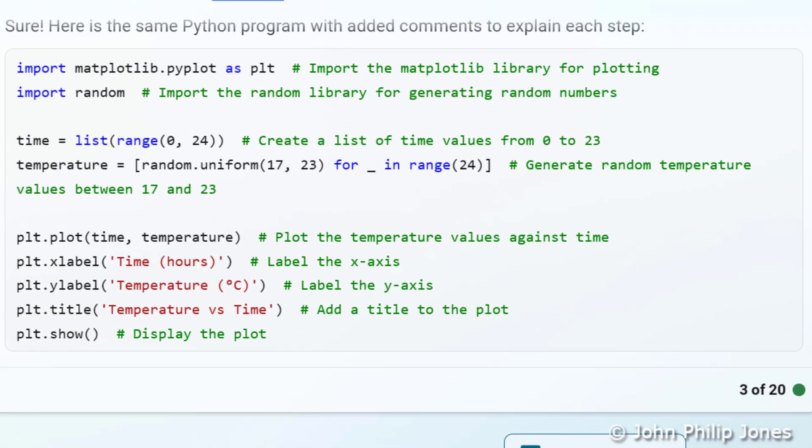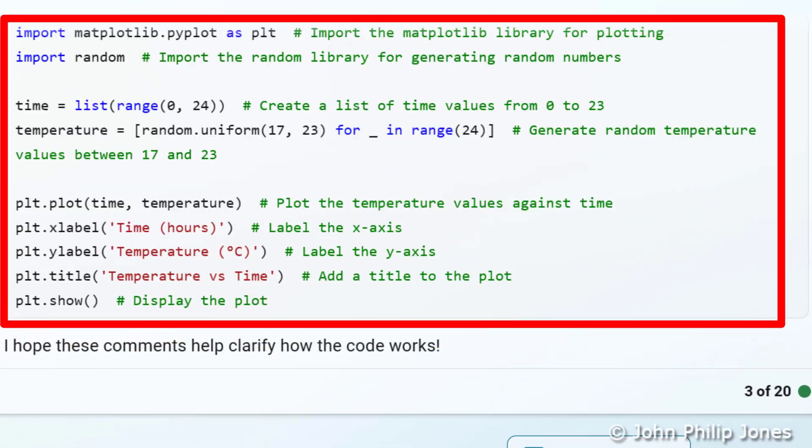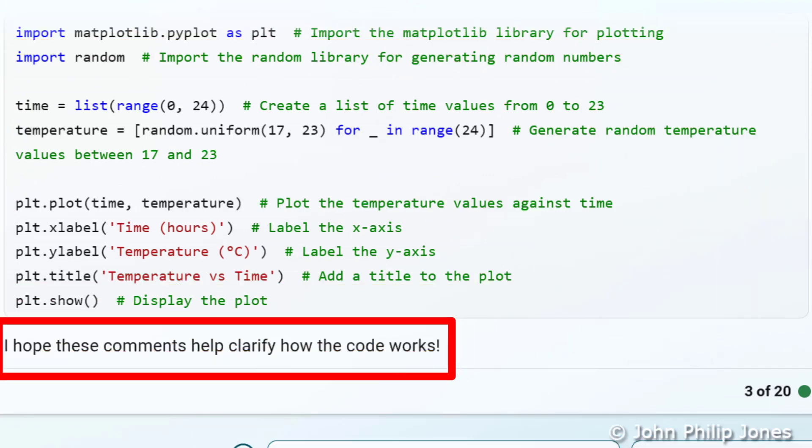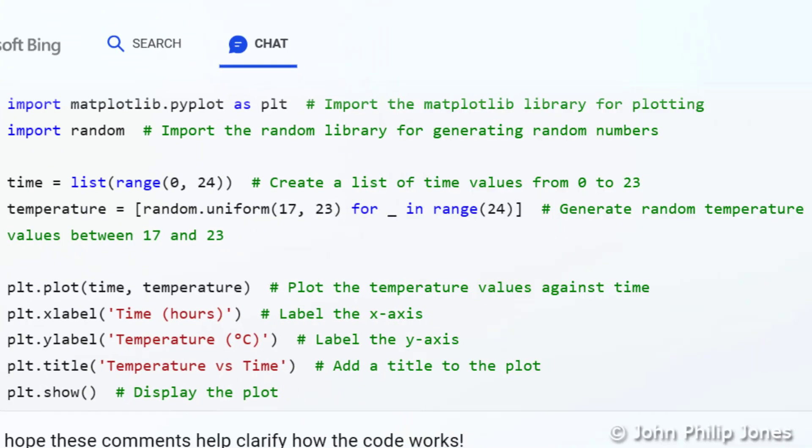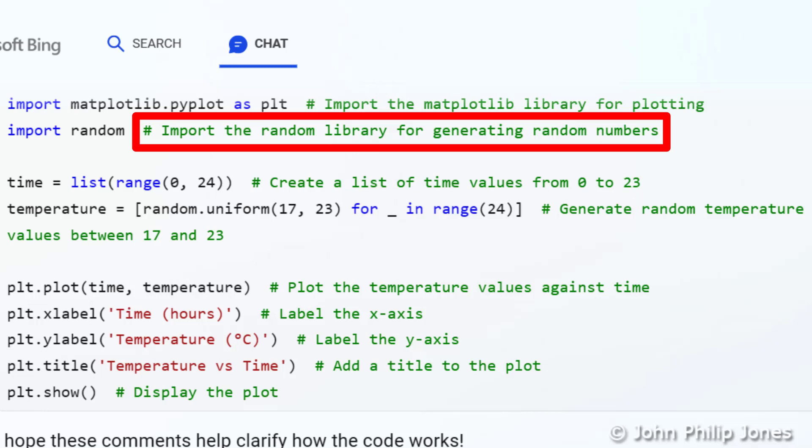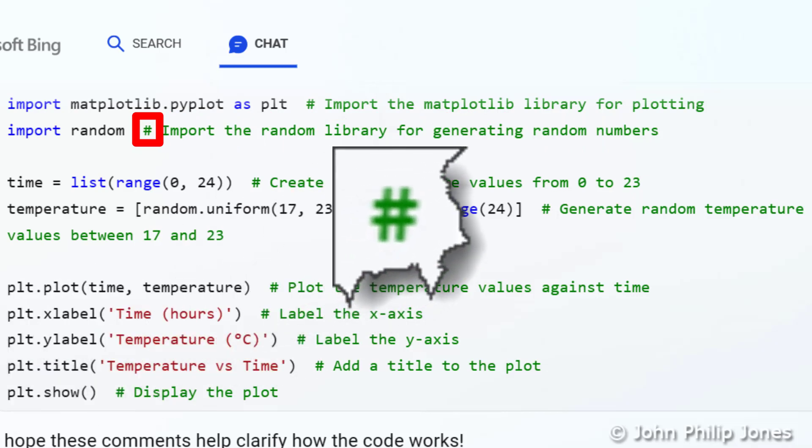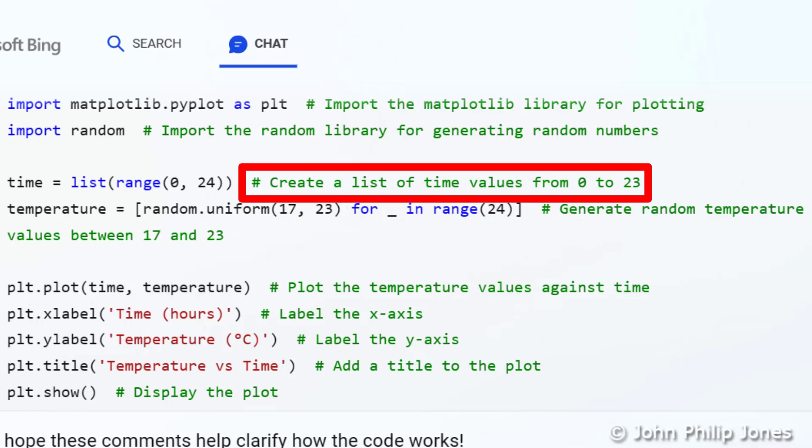And you can see it appearing with comments. And it goes on to say here, I hope these comments help clarify how the code works. I'll just consider a couple of the comments. If I look at this one, it says import the random library for generating random numbers, and I would like to point out the hash symbol in front here. Now that's given a different name depending where you live in the world, but in the UK it's called the hash symbol. And if you look here, this one says create a list of time values from 0 to 23, and it's indicating what this program statement is responsible for doing.